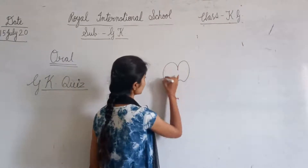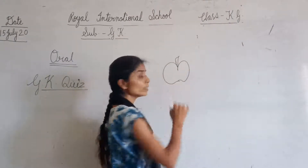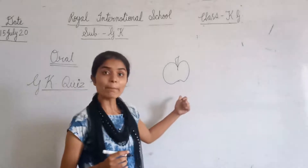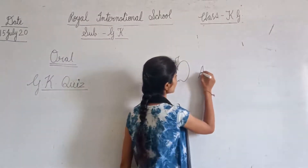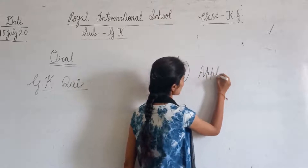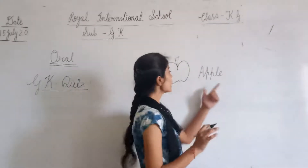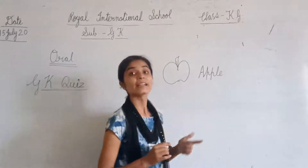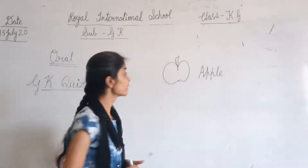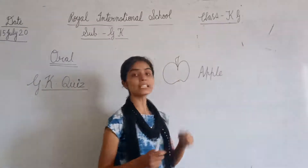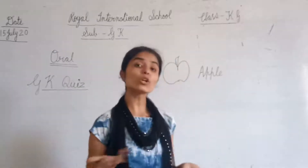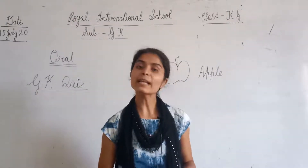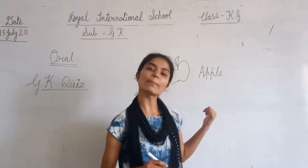Tell me, what is this? Identify the picture. Apple. What is this? Apple. A-P-P-L-E. Apple. Color of apple? Red. What is the color of apple? Red. Apple ka color konsa hota hai? Red. Color of apple: Red. Very good.